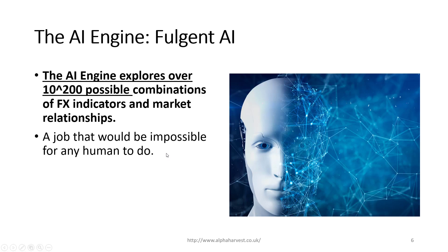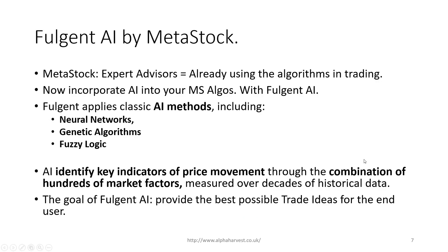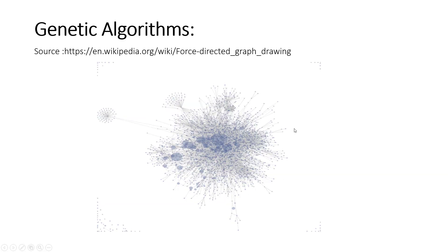The AI is going to test 10 to the power of 200 different combinations of FX indicators and market relationships. We take all the technical indicators we have, test them with all different combinations of settings, test and retest, and using a process of elimination the AI comes up with a few key strategies.